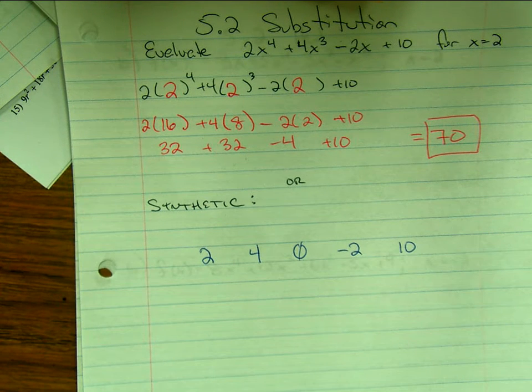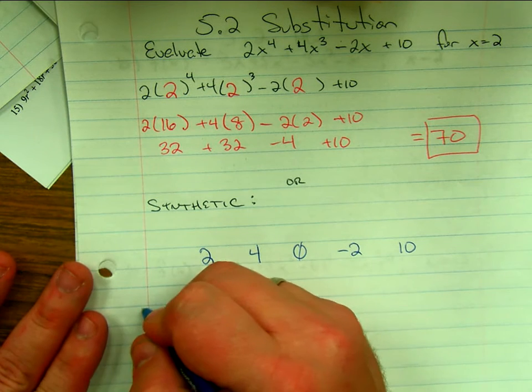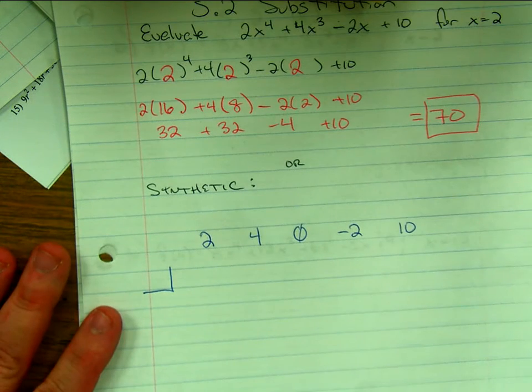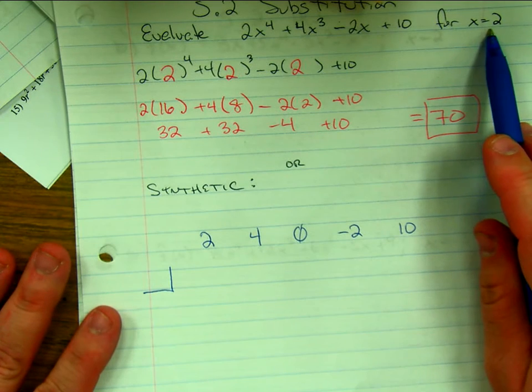All right, so step 1 you just write all the coefficients. Step 2, make a little box here and look up and say what is that I want to substitute in?